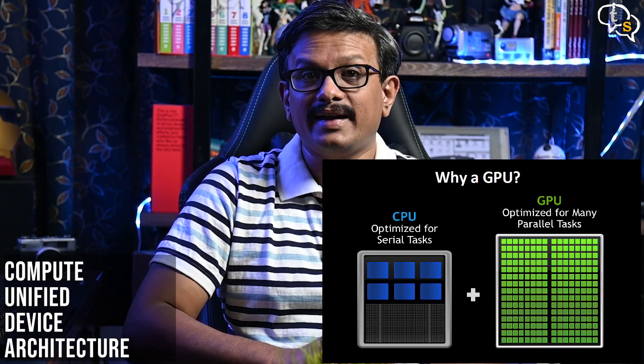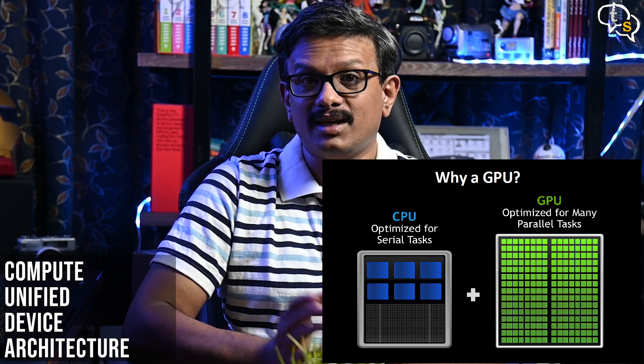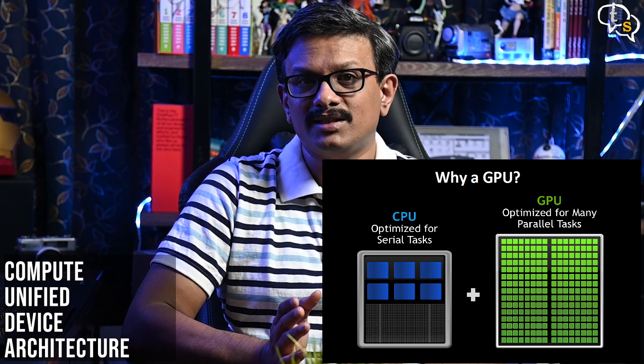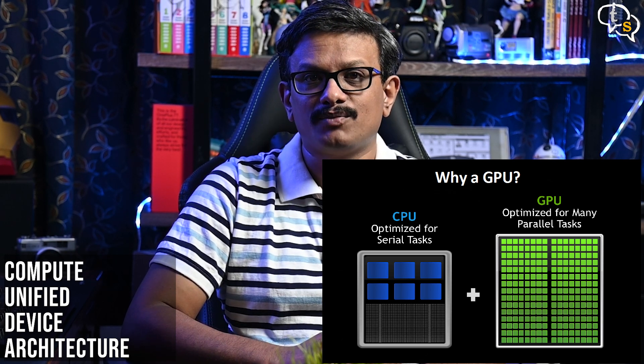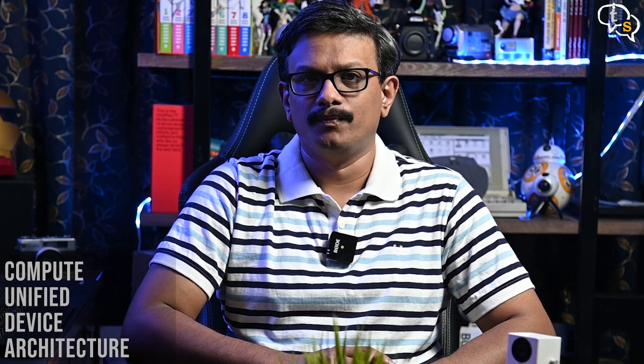A CUDA-enabled GPU is recommended with a compute capability of about 2.0. CUDA is a parallel computing platform and programming model that enables dramatic increases in computing performance by harnessing the power of the graphics processing unit, or GPU. The higher the version number, also called the SM number, the more CUDA features the GPU supports. But that's for a different video, as we are digressing from the main topic.